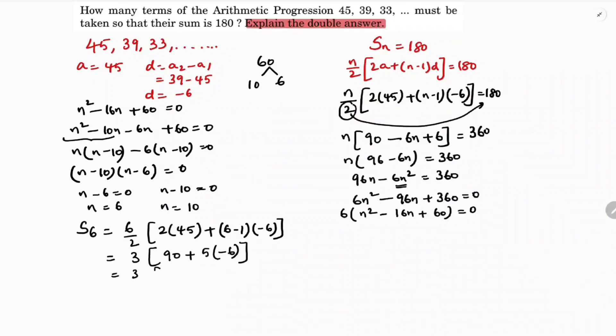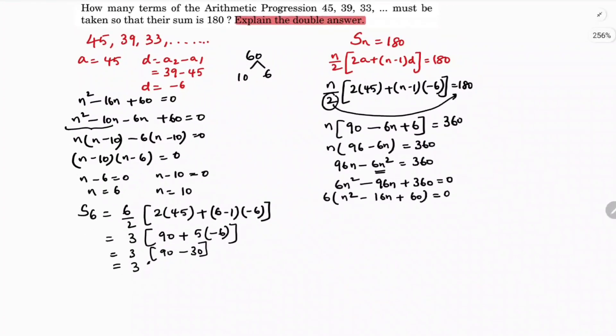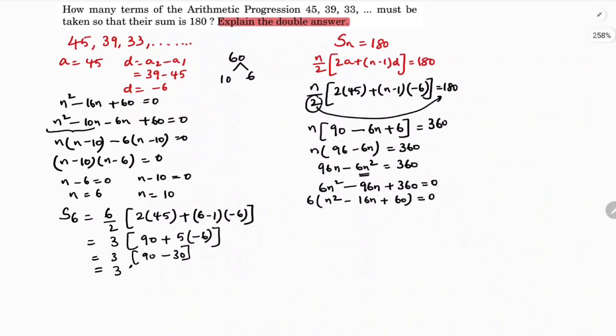So 3 times 90, 5 into 6 is 30, so it is 3 times 90 minus 30. You'll get 90 minus 30 is 60. So sum of 6 terms is 180.